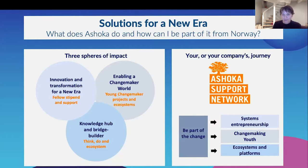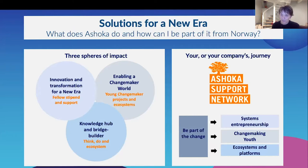How you can be part of it is what you can see on the right hand side here. Today we're really going to focus mostly on what we call our Ashoka support network. If you join this, you can be part of that change. There are three different routes really relating to the three different spheres of impact — you can either focus on supporting world-leading social entrepreneurs, on youth and changemaking, or on building the whole ecosystem and platform for transformation, or being part of all of it.